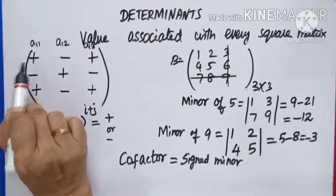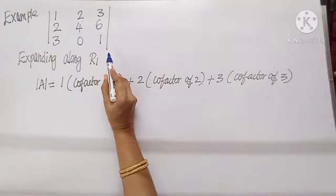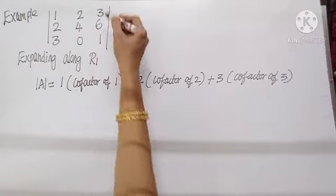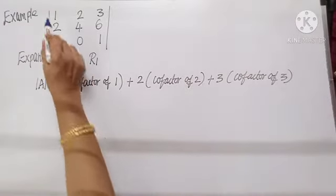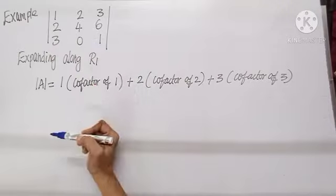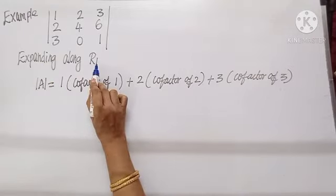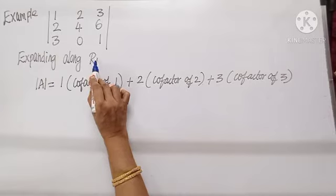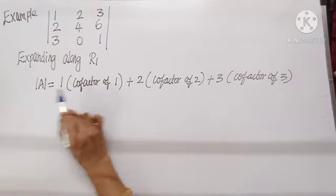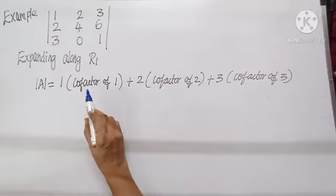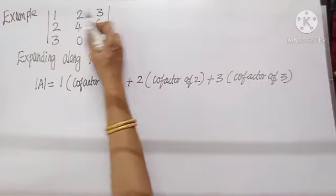First assign the sign, then find the minor — together that gives the cofactor. To expand a 3x3 determinant using cofactors: we can expand along row 1, row 2, row 3, or along any column. Let us expand along R1 (row 1). The elements of row 1 are 1, 2, 3. The determinant equals 1 times cofactor of 1, plus 2 times cofactor of 2, plus 3 times cofactor of 3.